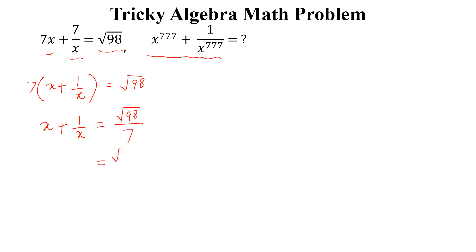We can write square root of 98 as 2 multiplied by 7 multiplied by 7, and 7 is square root of 7 multiplied by 7. Simplifying this, we get x plus 1 over x equal to square root of 2.